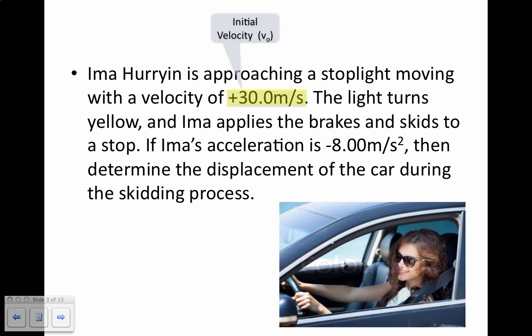The light turns yellow and IMA applies the brakes and skids to a stop. You're going to see this a lot in physics — whenever you see the word 'stop,' that means your velocity is 0. In this case, this would be our final velocity. If IMA's acceleration is negative 8.00 meters per second squared, then determine the displacement of the car during the skidding process.